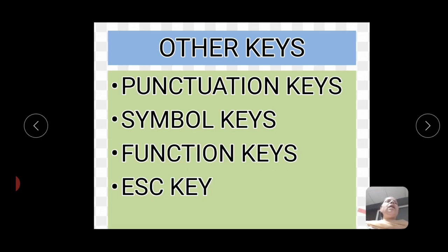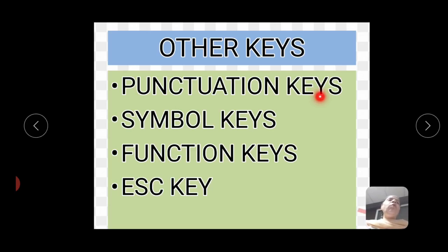Next is other keys. Our keyboard also has punctuation keys — like full stop, question mark, comma, inverted comma, semicolon. These keys are called punctuation keys. Next is symbol keys — like star, plus, minus, hyphen. These are symbols and these keys are called symbol keys.